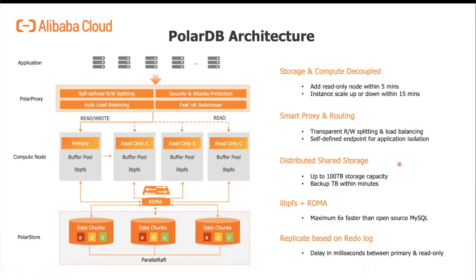This is an architecture diagram of PolarDB, a cloud-native OLTP database. At the top, the application connects through a Polar proxy which does automatic read-write load balancing. It's a single master with multiple readers — up to 15 read-only nodes — with centralized shared distributed storage where each data chunk is replicated three times. Adding a new read-only node takes less than five minutes; instance scaling takes less than 15 minutes. PolarStore supports automatic storage scaling up to 100 terabytes, and backups via storage snapshots complete in minutes even for terabyte-size databases. This architecture achieves up to six times the performance of open source MySQL.